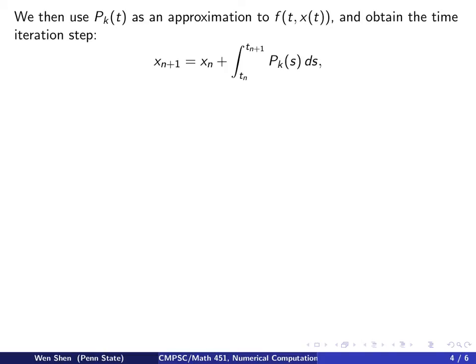So the idea now will be we will use pk as an approximation to the function f of t and x, and think x as a function of t. So in the end, this becomes a function of t, and we interpolate it using the pk. So we plug in, and then the numerical iteration step becomes xn plus 1 equals xn plus the integral from tn to tn plus 1 of my polynomial pk, which we just wrote out in the Lagrangian form. So plugging in the form of the pk, we get this expression.